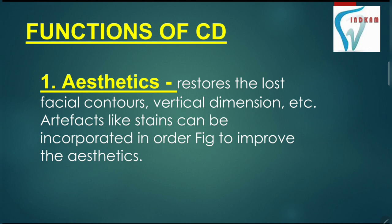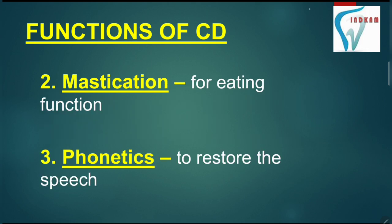Why are we fabricating a complete denture? What are the functions of a complete denture? The first and most important function is aesthetics — it restores the lost facial contours, vertical dimension, etc., and improves the appearance of a person. Artifacts like stains can be incorporated to improve aesthetics. The second important function is mastication — for eating food. The third is phonetics — to restore speech.